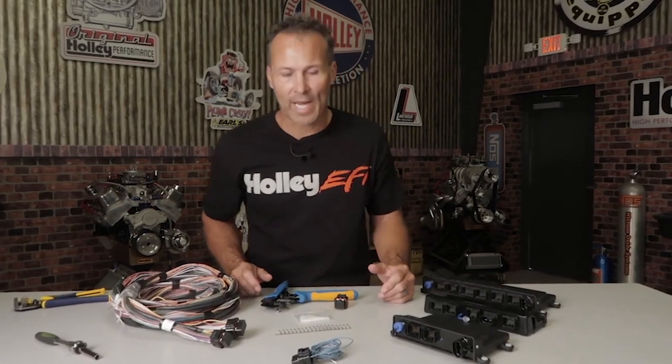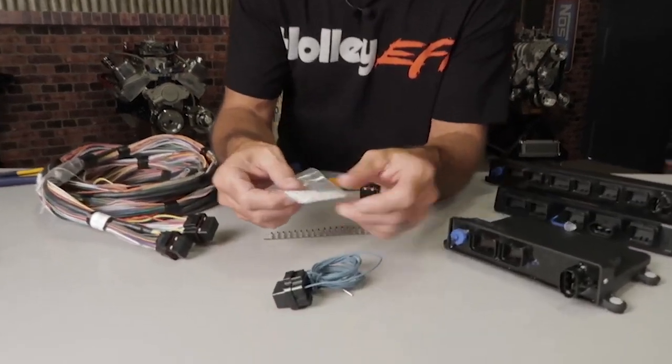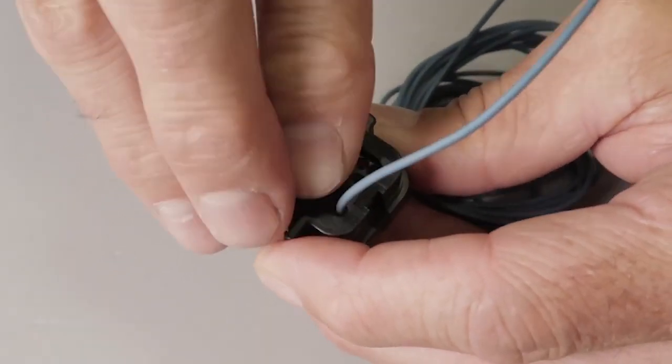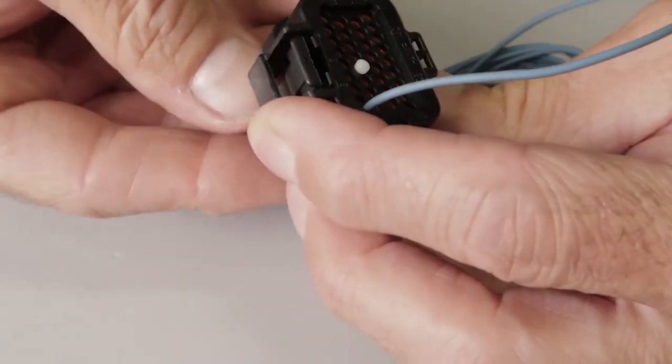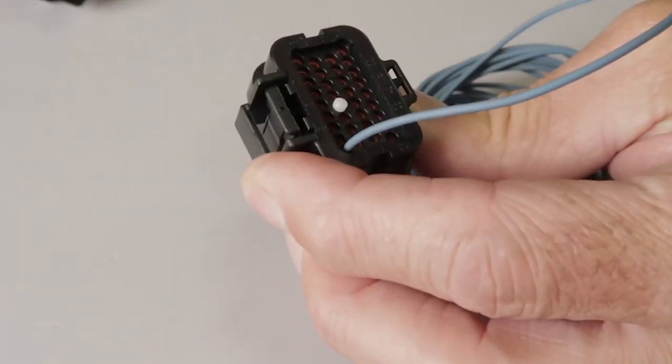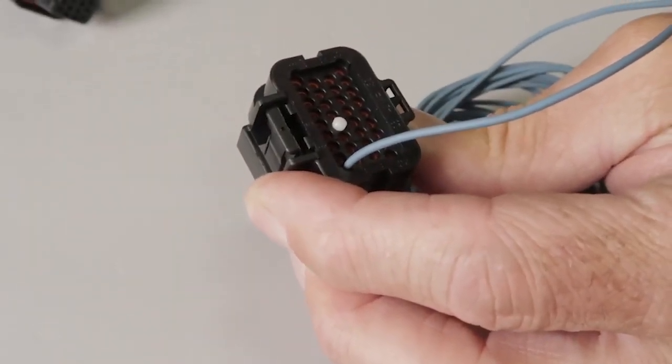With our SuperSeal 1.0 connectors, we include these dummy pins. You simply put them in place of any open hole that you may have in your ECU connector. That way you keep any contaminants out. And don't forget to lock the tab when you're finished.